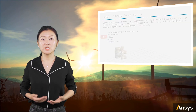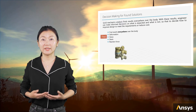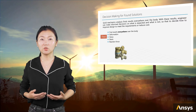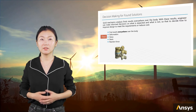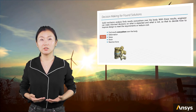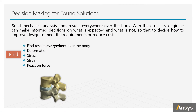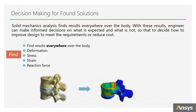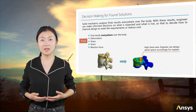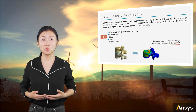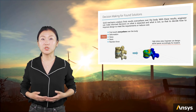As for the final part, solid mechanical analysis finds results everywhere over the body. These results include deformation, stress, strength, reaction force, etc. With these results, an engineer can make informed decisions on what is expected and what is not, so that you can decide how to improve the design to meet the requirements or reduce cost.